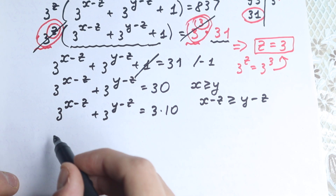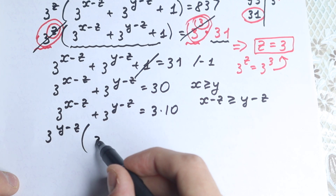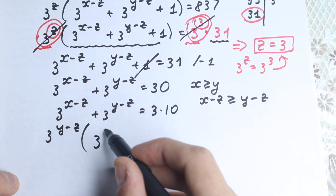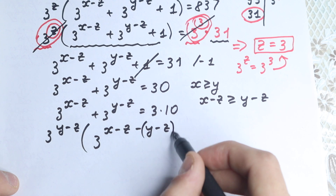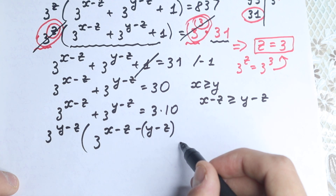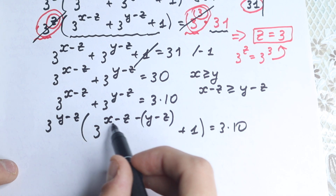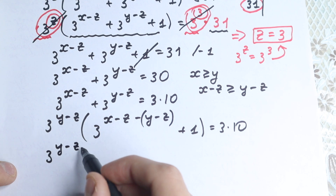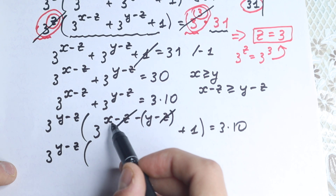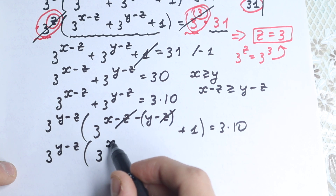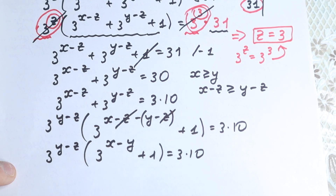From this expression, let's factor 3 to the power y minus z. In parentheses we get 3 to the power x minus z minus (y minus z), plus 1, equal to 3 times 10. Simplifying the exponent: x minus z minus y plus z gives x minus y. So we have 3 to the power y minus z times (3 to the power x minus y plus 1) equal to 3 times 10.